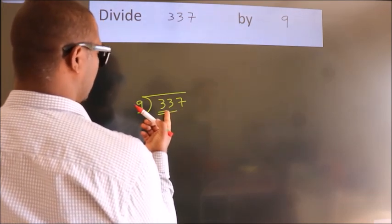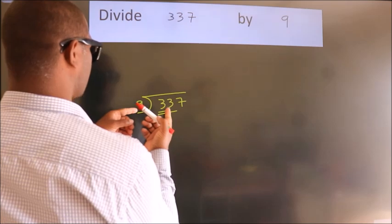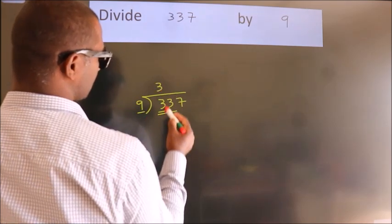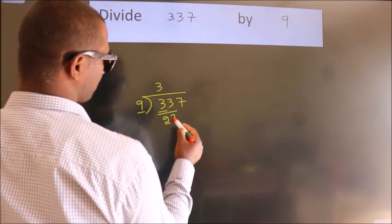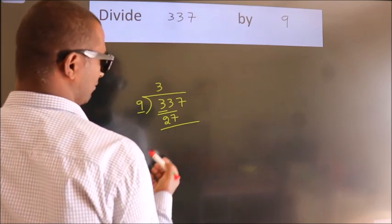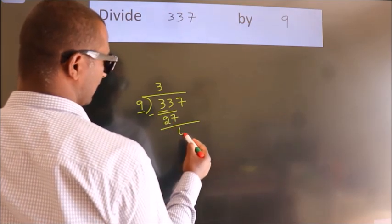A number close to 33 in the 9 table is 9 threes, 27. Now we should subtract. We get 6.